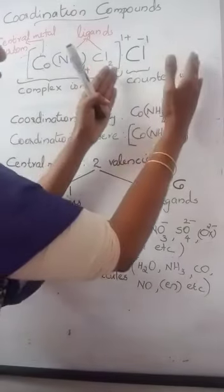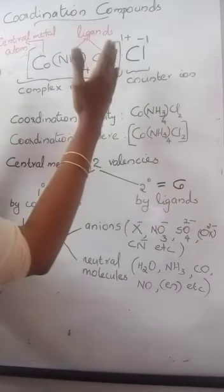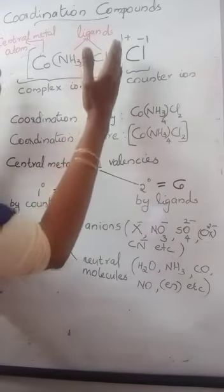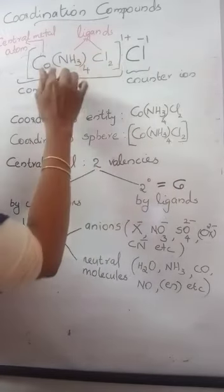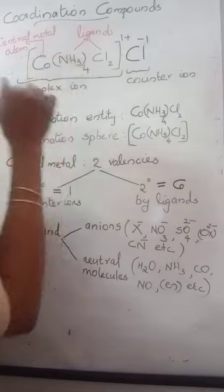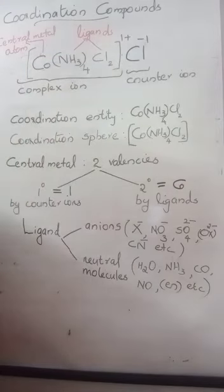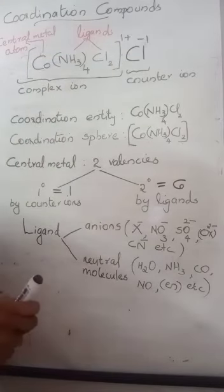The counter ion part gives you the primary valency, and the number of ligands — anions or neutral molecules — inside the square bracket gives you the secondary valency of the central metal atom.